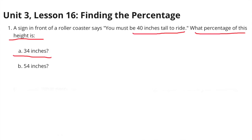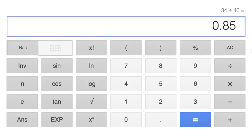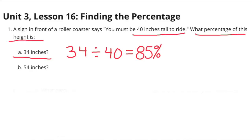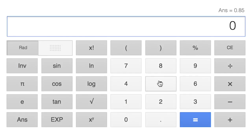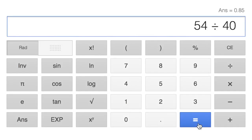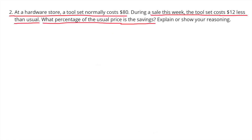What percentage of this height is each of the following? A: 34 inches — 34 divided by 40 equals 85%. 34 inches is 85% of 40 inches. B: 54 inches — 54 divided by 40 is 135%. 54 inches is 135% of 40 inches.